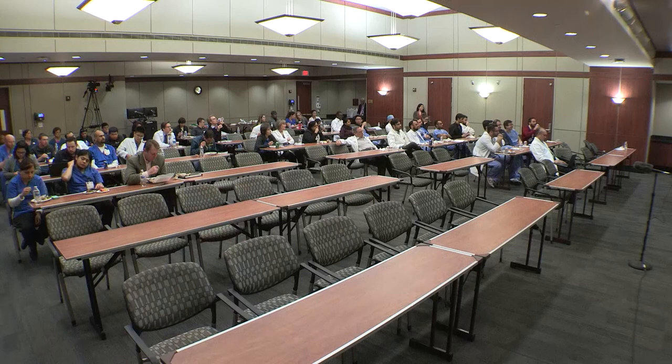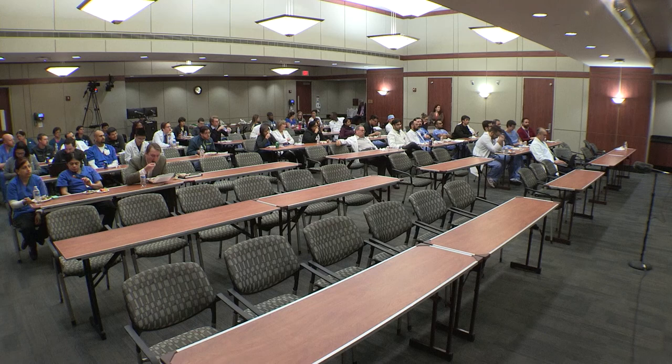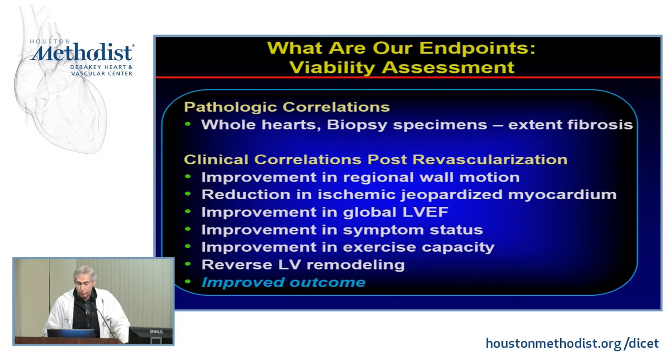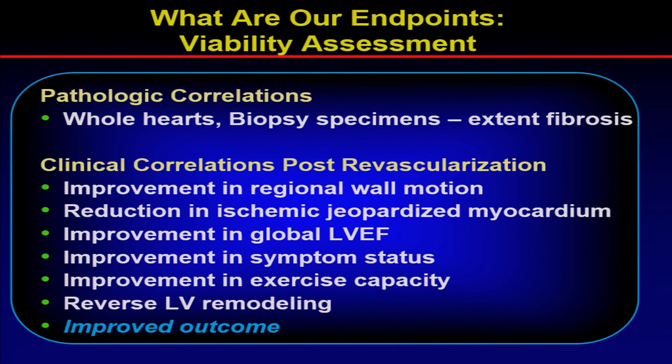We'll spend a few minutes talking about myocardial perfusion imaging — both SPECT and PET — in terms of viability. It's important to clarify the endpoints: there are pathologic endpoints such as the amount of fibrosis versus viable myocytes present, and clinical correlates including improvement in regional function, reduction in jeopardized myocardium, improvement in global and regional ejection fraction, improvement in symptom status, exercise capacity, reverse remodeling, and improved outcomes.